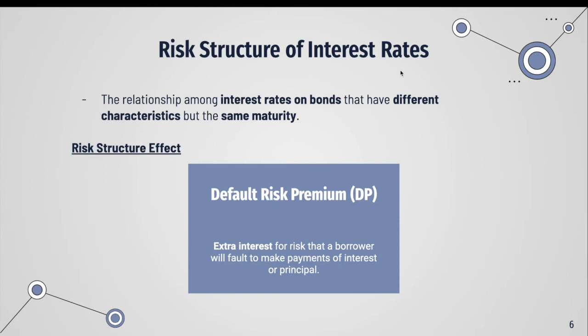The risk structure of interest rates is the relationship among interest rates on bonds that have different characteristics but the same maturity. The default risk premium is the extra interest charged for the risk that the borrower will fail to make payments of interest or principal. Bonds of private corporations have higher interest rates than comparable bonds issued by the Government of Canada.